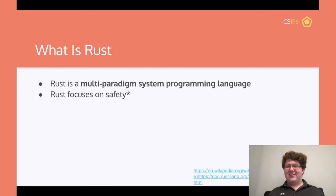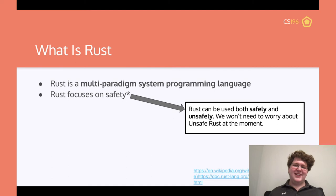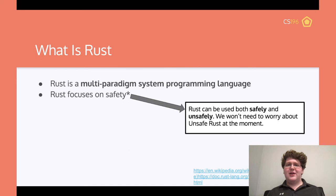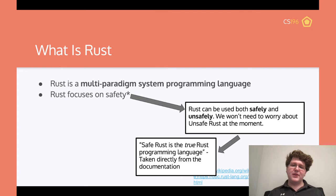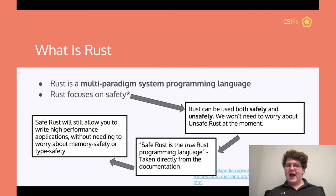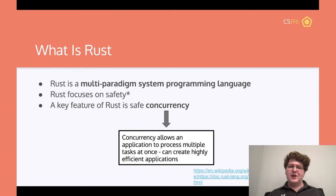Rust focuses on safety — with an asterisk. Rust can be used both safely and unsafely. There's something called unsafe Rust, which is basically a more difficult version that takes away a lot of things you'd normally have. Safe Rust is the true Rust programming language — that's a direct quote from the Rust documentation. Safe Rust will still allow you to write high performance applications without worrying about memory safety or type safety.